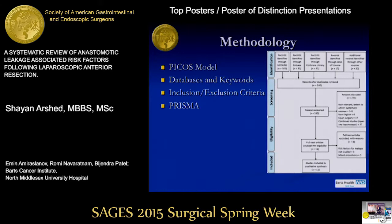The methodology used the PICOS model. The population was patients undergoing laparoscopic anterior resections — all for rectal cancer. The intervention was laparoscopic anterior resection with anastomosis, either including or not including a protective stoma. Patients with risk factors were compared to patients without them. The outcome was anastomotic leak with symptoms confirmed radiologically or by re-operation. Studies included were all experimental and observational studies, except single case studies. Databases used were Medline (PubMed), Embase, Web of Knowledge, and Cochrane.